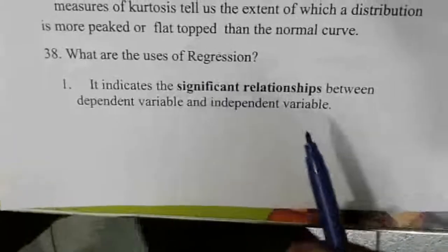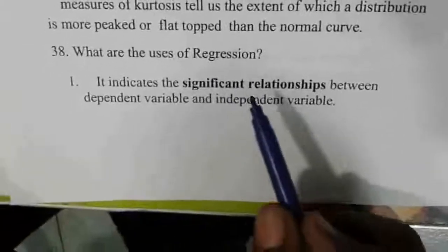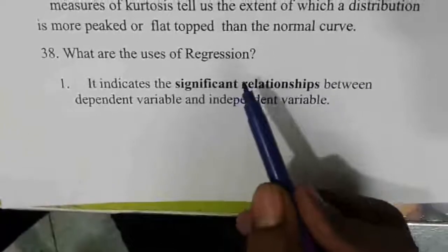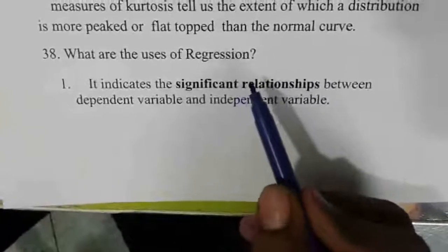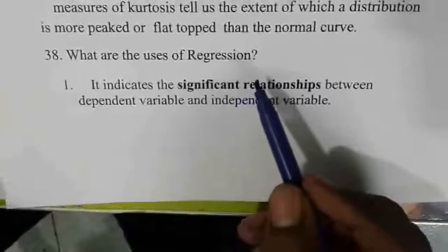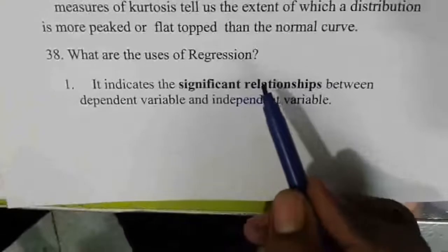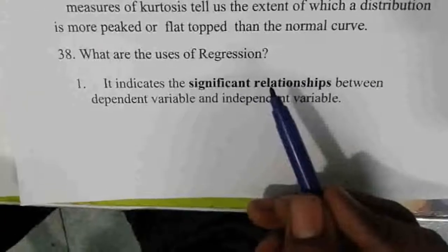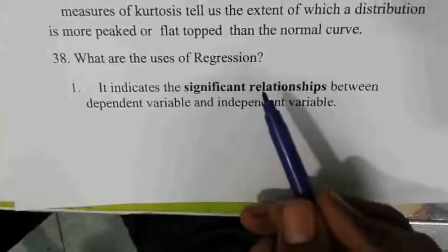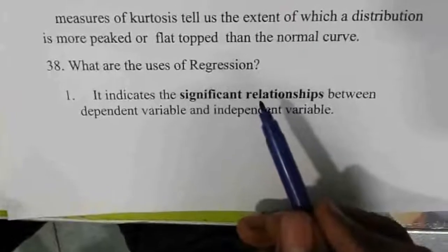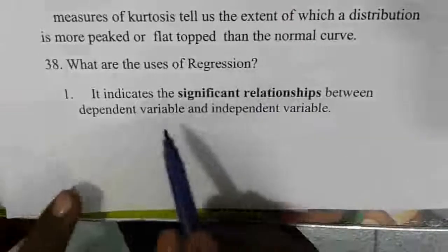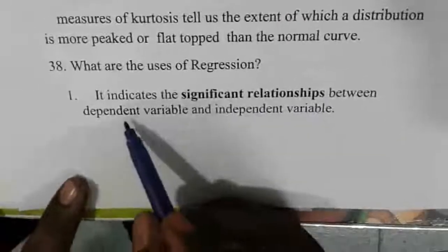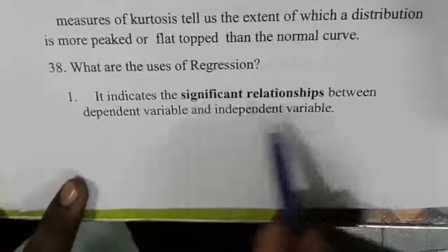Uses of regression: regression is very important. We can find unknown values from known values. That means if you know X, you can find Y, and vice versa. That is the significant relation between the dependent variable and independent variable.